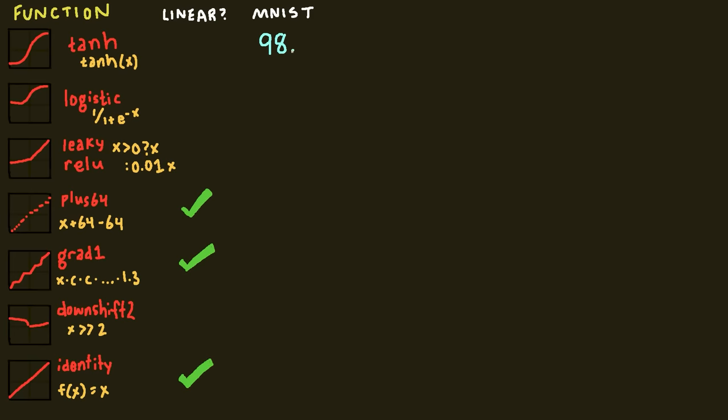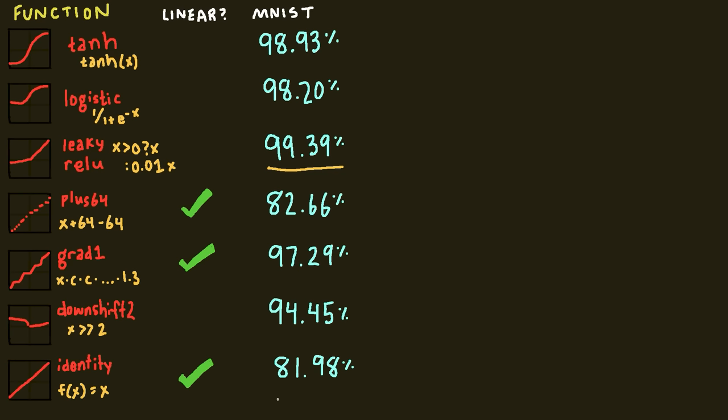On the MNIST problem, all of the transfer functions do well. As expected, the classics are nearing 100% accuracy. Even a simple linear model using the identity function gets like 82%. Plus 64, which gets a little bit of non-linearity with roundoff error, outperforms it slightly. But the nice smooth grad1 function is almost in the same class as the classic functions. It's working quite well. So it seems like our hypothesis is panning out, and I can sense the professor beginning to sweat.